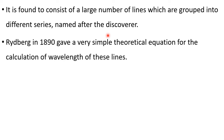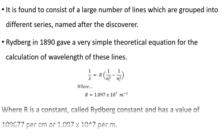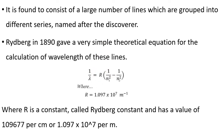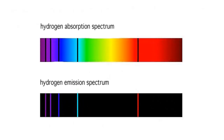Different names are given for different discoveries. Rydberg is the person who has done this work and has given a beautiful equation we use in numerical problems. We will study this again in Bohr's theory. R is the Rydberg constant. You can compare: where a bright line appears in emission, a dark line appears in absorption at the same position. A further discussion of emission and absorption will continue when we study the failure of Bohr's model. Thank you.